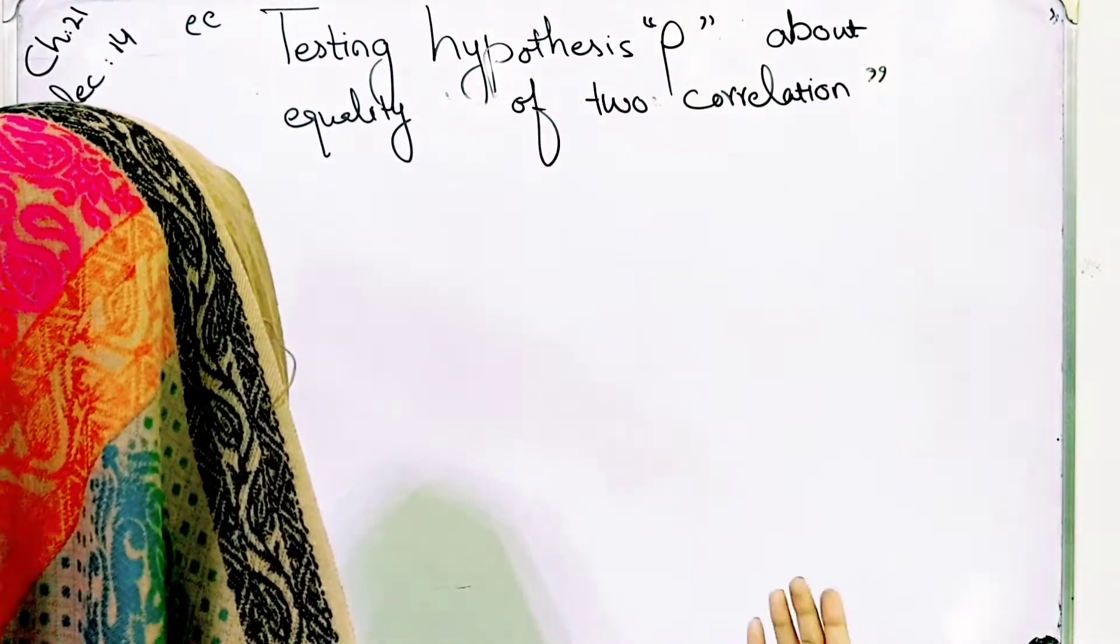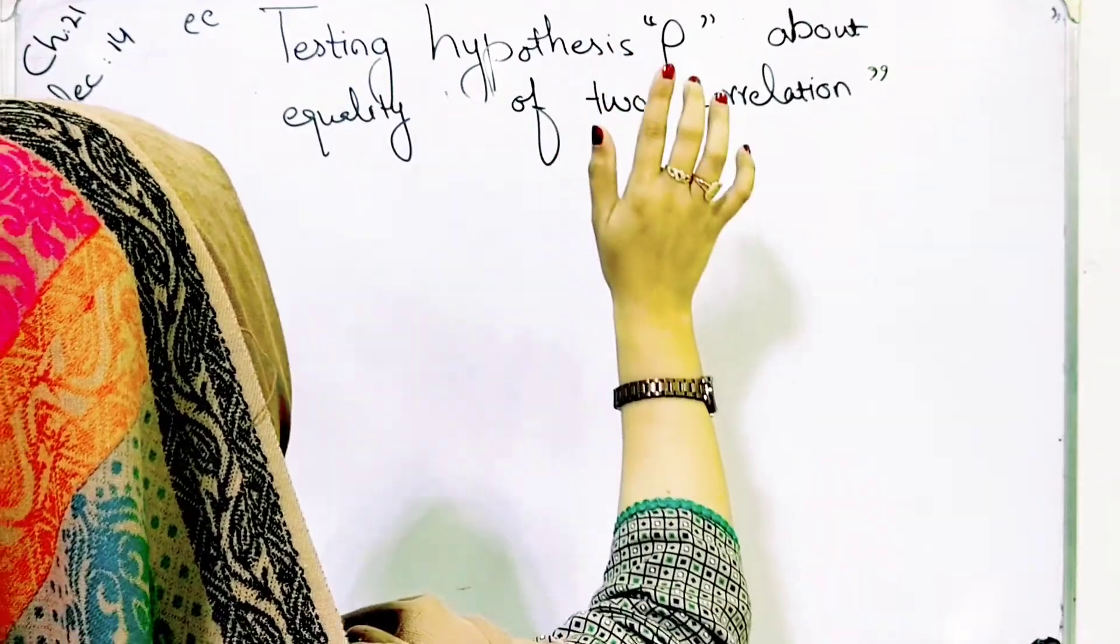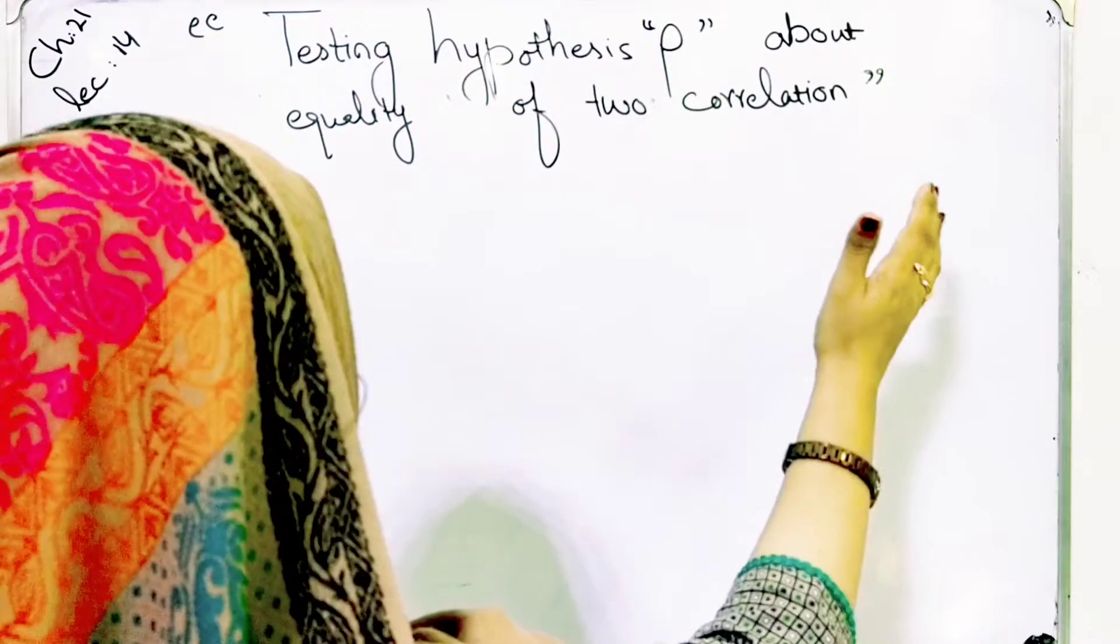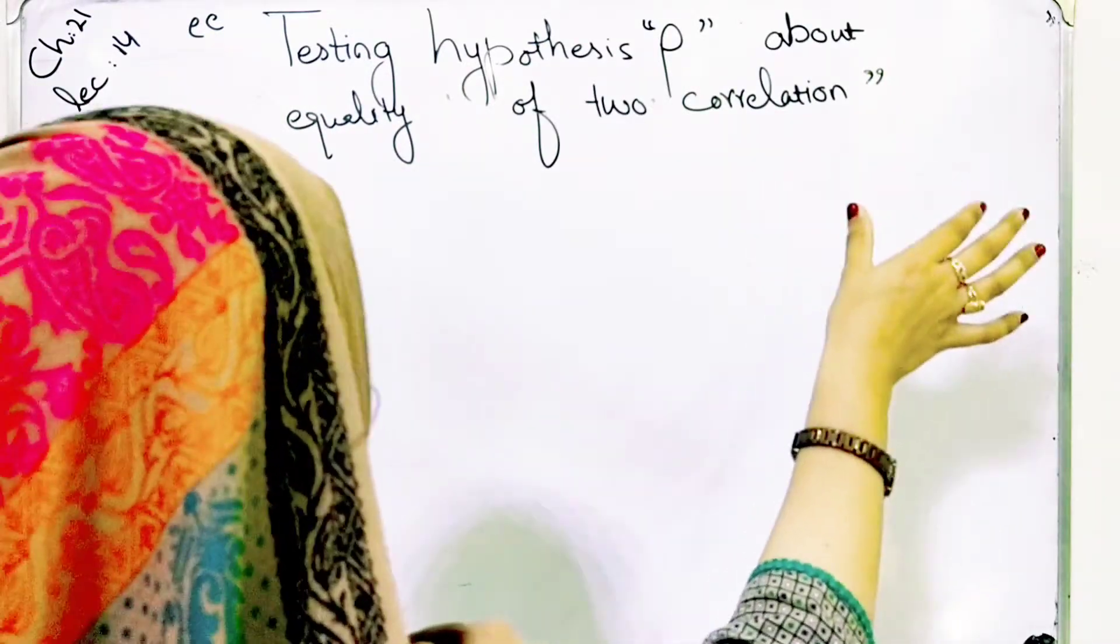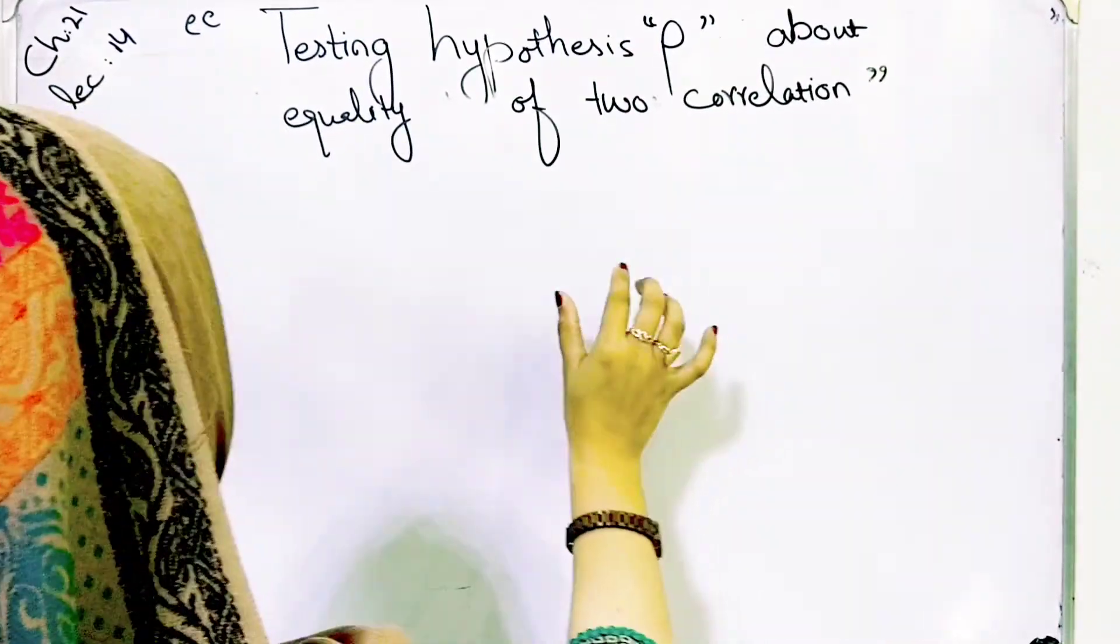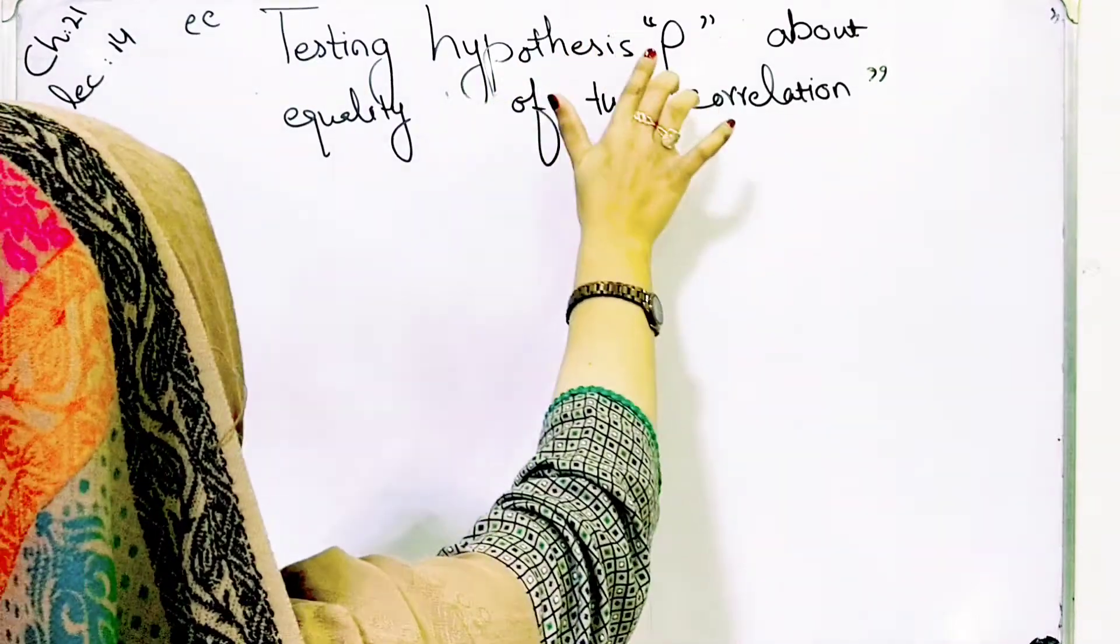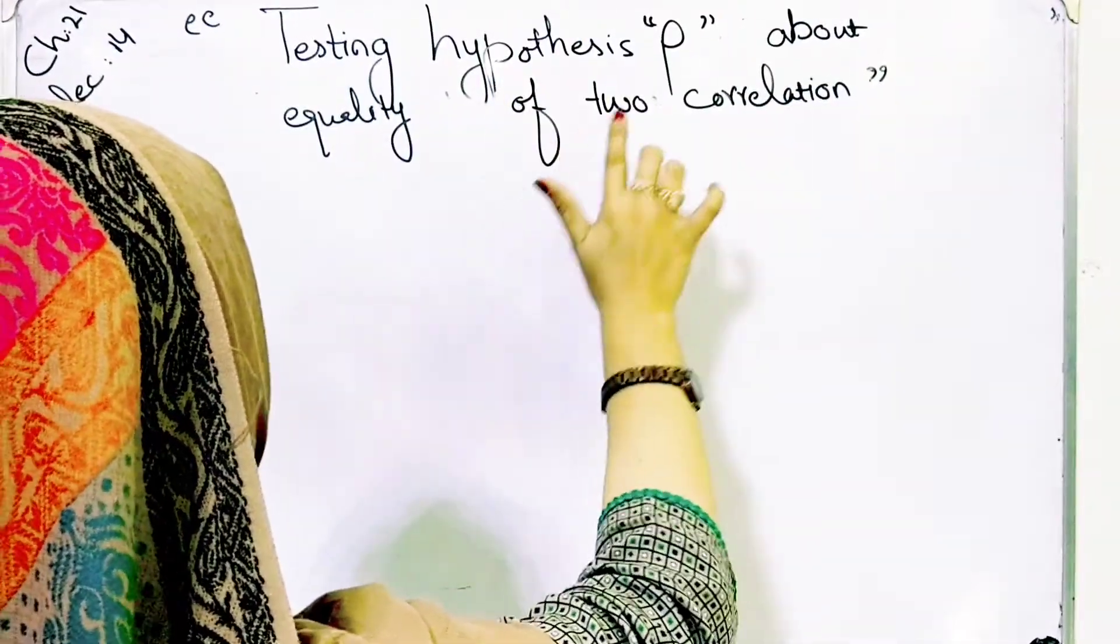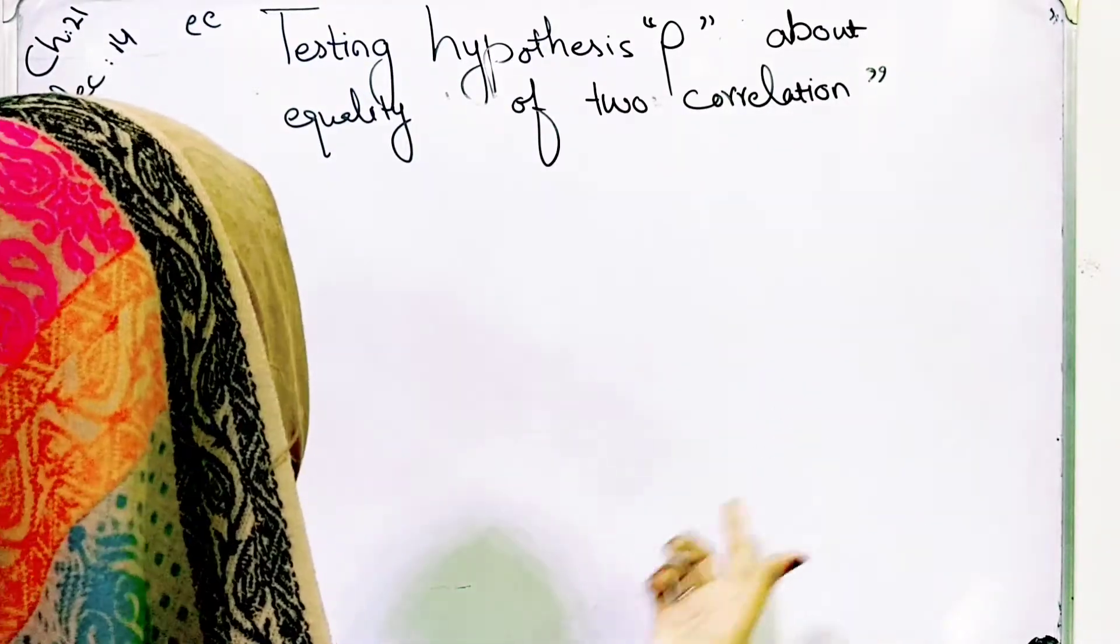We have discussed the situation when the correlation coefficient values, rho values, equal some specified values rather than zero. Now we have the situation for testing hypothesis rho about equality of two correlations.